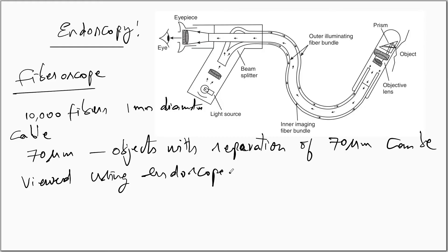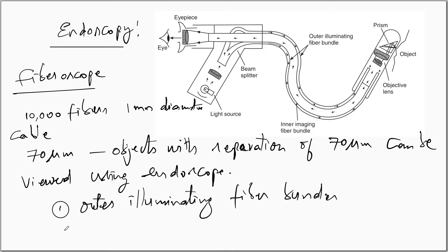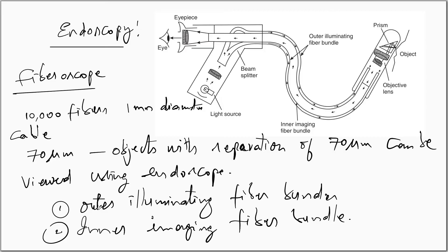The endoscope has two fiber bundles: the first is the outer illuminating fiber bundle, and the second is the inner imaging fiber bundle. Through the illuminating fiber bundle, we launch light into the inner parts of the body. A light source and certain optics are used to make the beam collimated and focused onto the outer illuminating fiber bundle. A beam splitter is used here, which splits the incident beam into equal or unequal parts depending on its structure, enabling light to be launched equally into all fibers of the outer illuminating fiber bundle.